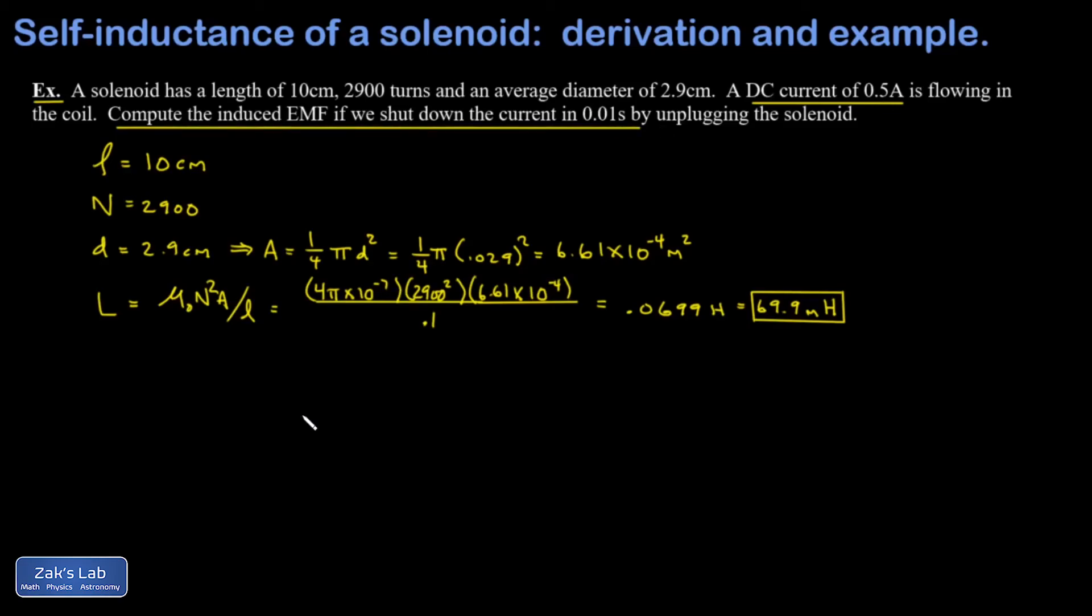We use our new formula for the induced EMF in terms of the self-inductance: L delta I over delta T. My self-inductance is 0.0699 Henrys, my change in current is half an amp, and my change in time, we shut this thing off in one hundredth of a second. When I crunch the numbers, I get 3.50 volts induced to try to keep this current flowing.